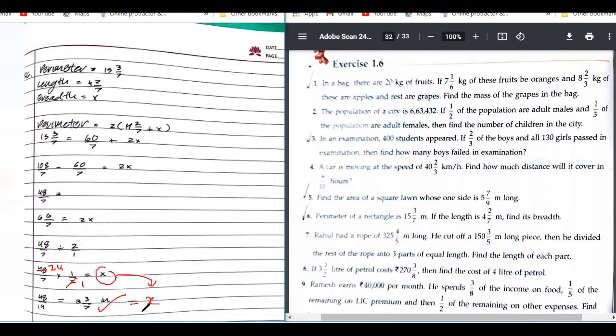Where is this x going? Equals to x. And your final statement. Therefore, breadth of the rectangle is 3, 3 by 7 meter. Yeah. Okay. Is this thing clear? Yes.